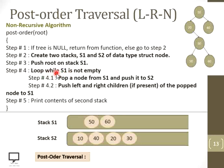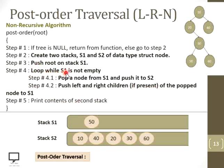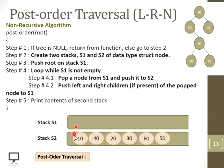Return to step four. Check whether S1 is not empty — yes, condition is true. Pop the top of stack S1, which is 60, and push it onto S2. Check whether 60 has any left or right child — no, it is a leaf node, so step 4.2 does not perform any operation. Return to step four to check the while condition — S1 is not empty, condition is true. Perform pop operation on stack S1: top of the stack is 50. Pop it and push it onto S2. For 50, no left or right child is present, so skip that step and return to step four. Now stack 1 is empty.